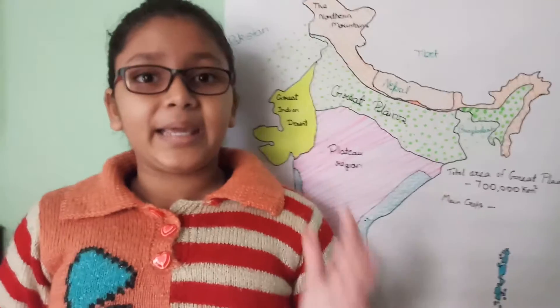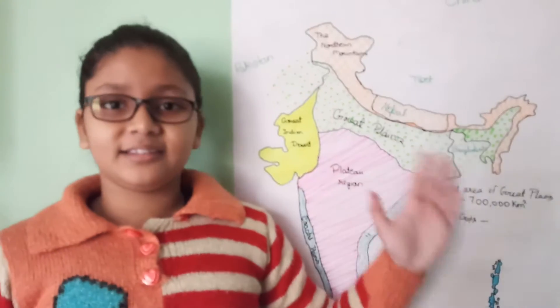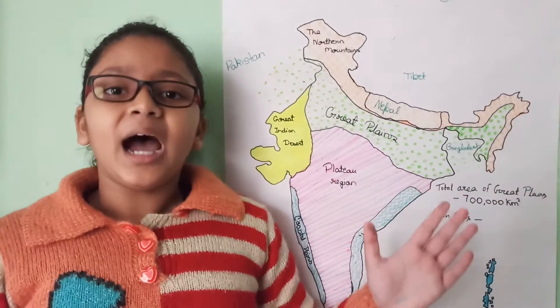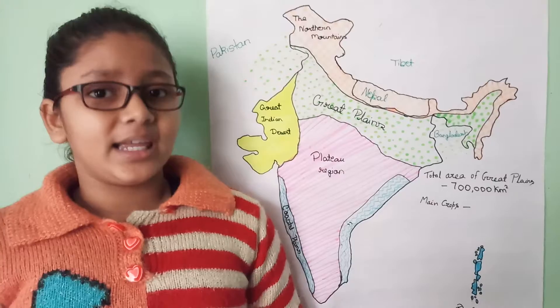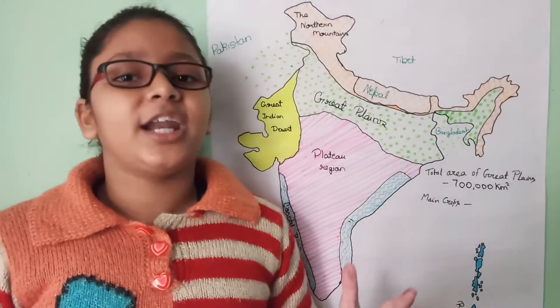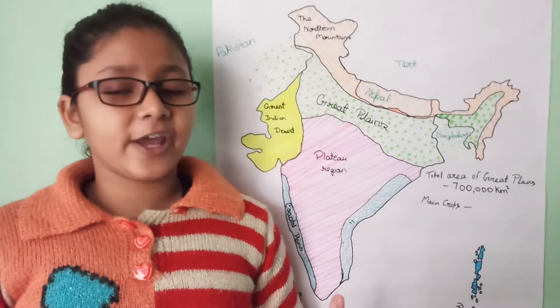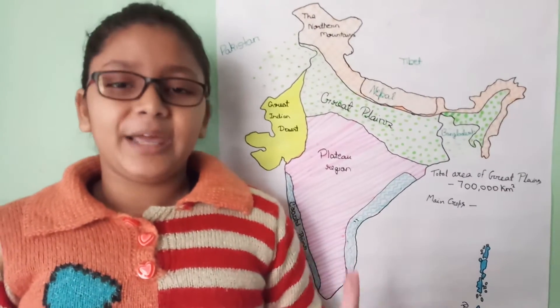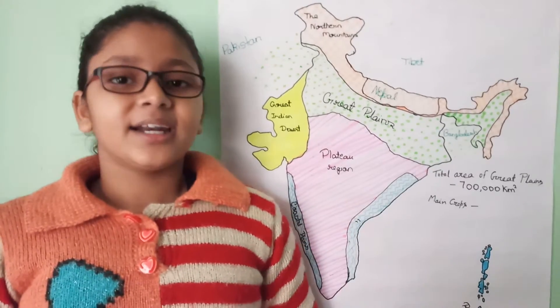The main crops grown in this region are wheat, rice, and some other important crops are sugarcane, maize, and cotton.